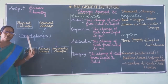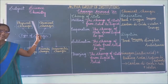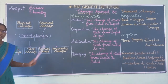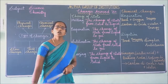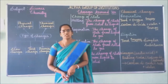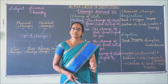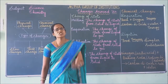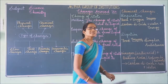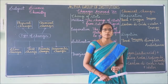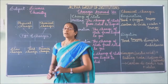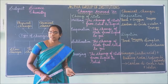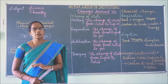So, what are the types of changes? There are two types: physical change and chemical change. These can be further classified into slow changes, fast changes, reversible changes, and irreversible changes. Apart from these, we also have desirable change, undesirable change, periodical change, and non-periodical change.